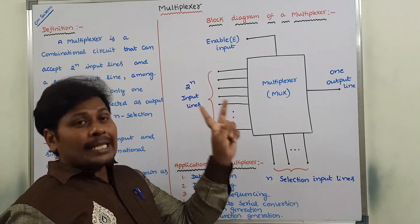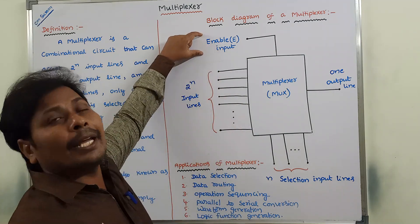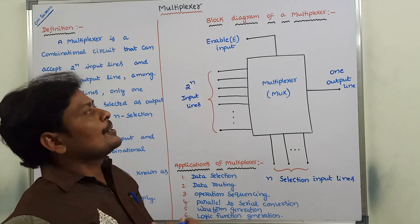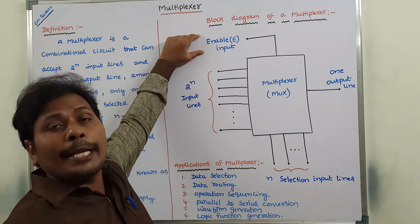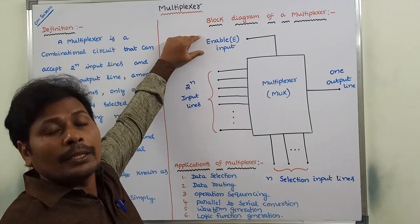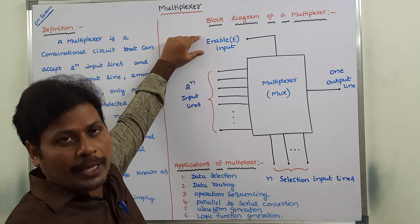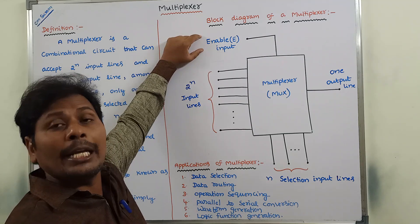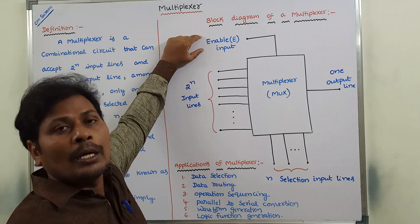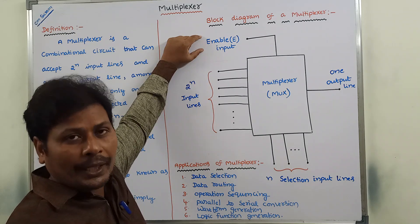This operation can be done when the enable input value E is equal to 1. So if the enable input value E is equal to 1, the multiplexer performs its operation. When the enable input value E is equal to 0, the multiplexer does not perform its operation.